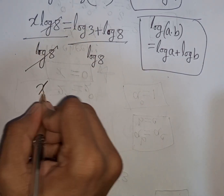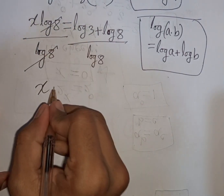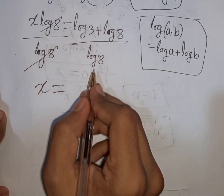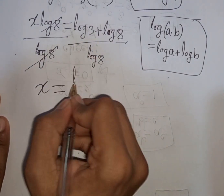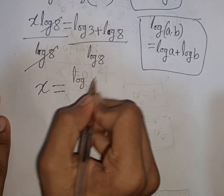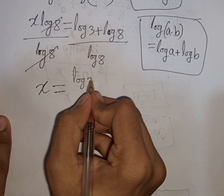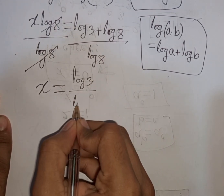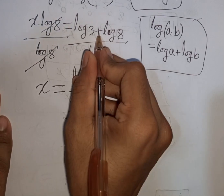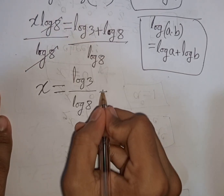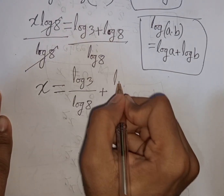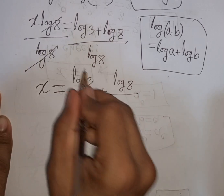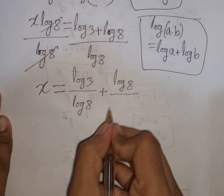So x is equal to this divided by this. That means it will be log 3 over log 8 plus log 8 over log 8.